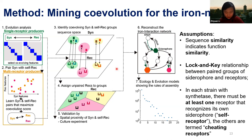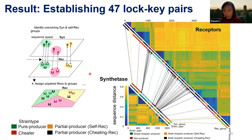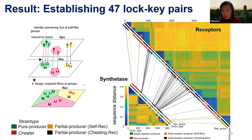Here is what we get after this pairing algorithm: not three subtypes of lock-and-key, but about 40 to 50 different subtypes. Here are the receptors in sequence space by similarity, and here are the synthetases by their similarities. Each arrow links a group of synthetases and receptors together.